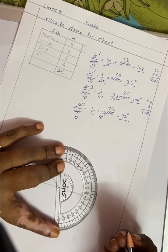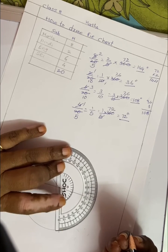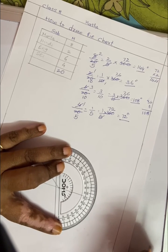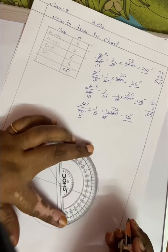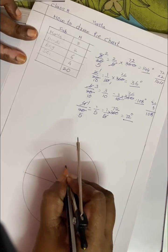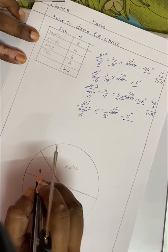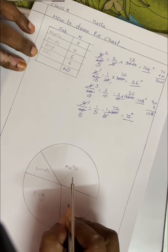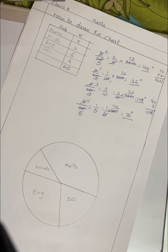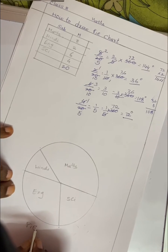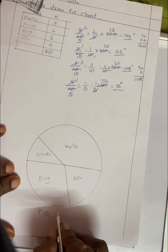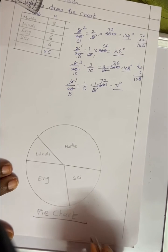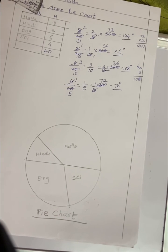Now the last one is 72 degrees. There is no need to draw 72 — if you set the protractor properly it shows 72 degrees. Now I will write the labels: Math, English, and Science. Pie chart complete — hope you understood, thank you.